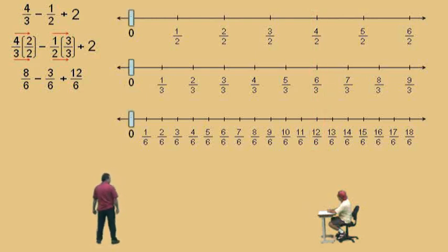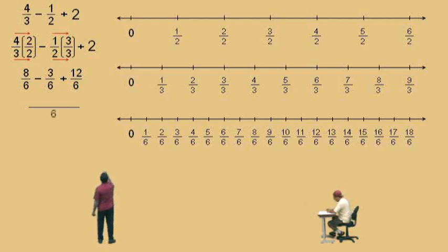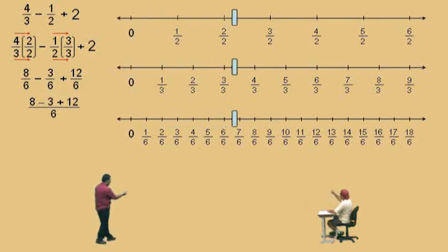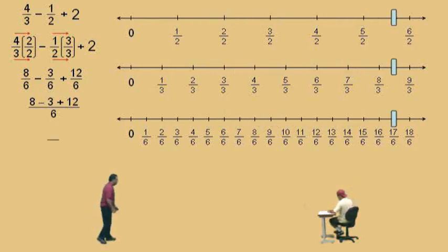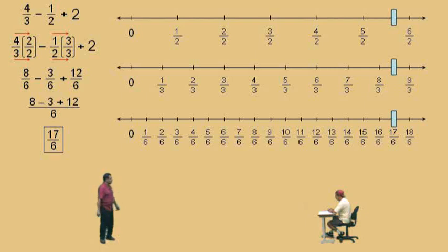All right, so let's finish this problem. We have 8 sixths subtract 3 sixths plus 12 sixths, which is how many sixths, Charlie? 17. And again, showing our work, we put a fraction bar with 6 as our denominator — it's basic arithmetic. We take 8 subtract 3 plus 12, which gives us 17 sixths. Remember, when you're doing arithmetic, addition and subtraction are done at the same time, working left to right, whatever comes first. So our answer is 17 over 6. In the next video, we'll talk about finding the lowest common denominator. See you soon!